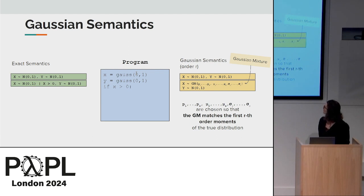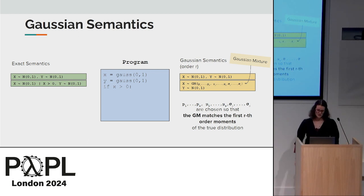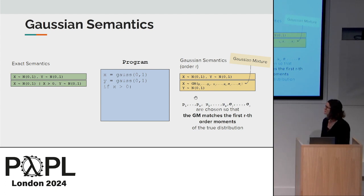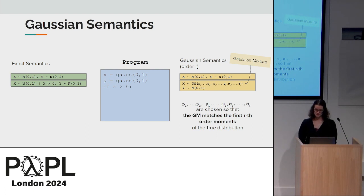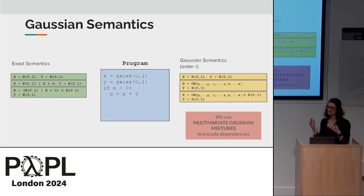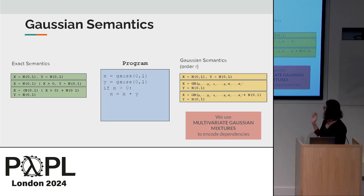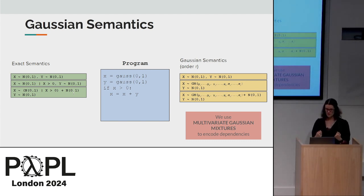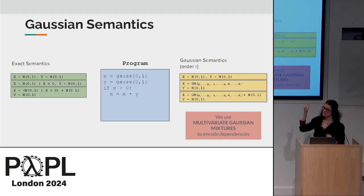Going back to the toy example: in the exact semantics, when we enter the if-branch, the marginal over x is a truncated Gaussian. But in Gaussian semantics we use a Gaussian mixture, choosing its parameters so that the mixture has the same moments as the truncated Gaussian up to a certain order. We actually do this using the joint distribution with multivariate Gaussian mixtures. This also encodes the dependence introduced between x and y when the sum is performed — the covariance matrix captures this dependence easily. Moreover, computing the sum of a Gaussian mixture and a Gaussian distribution then becomes practically straightforward.